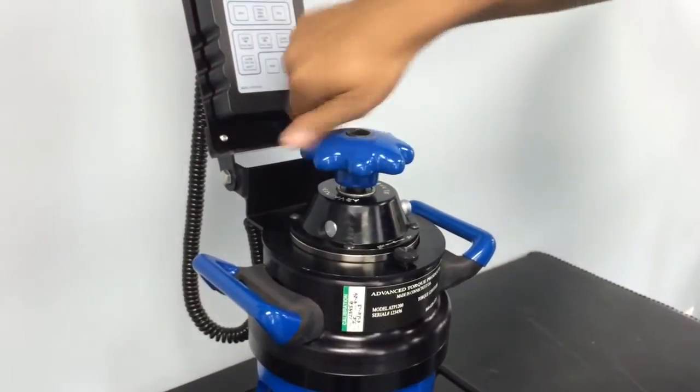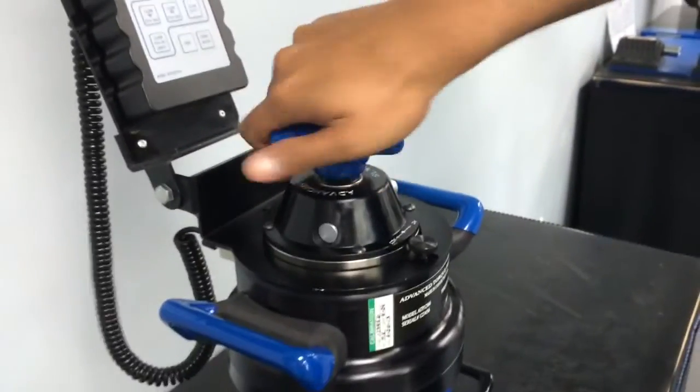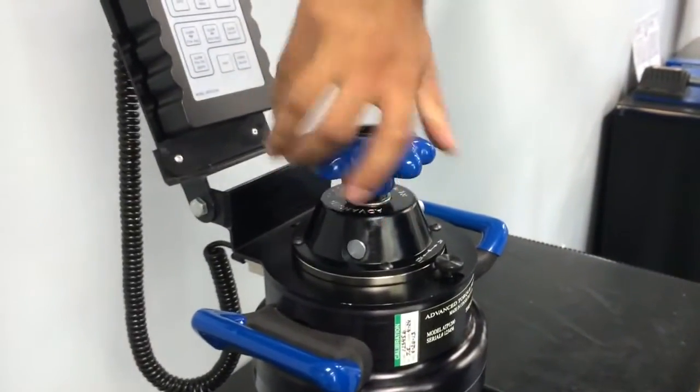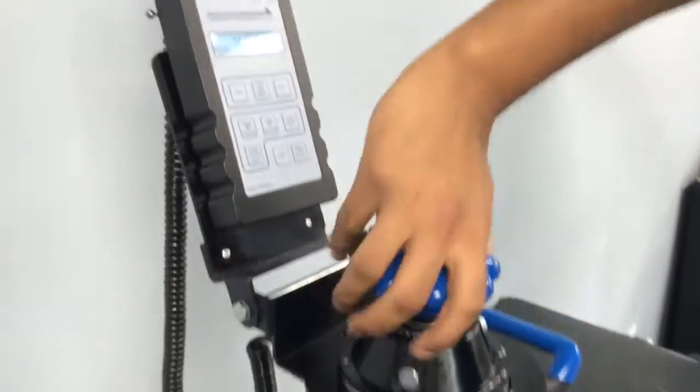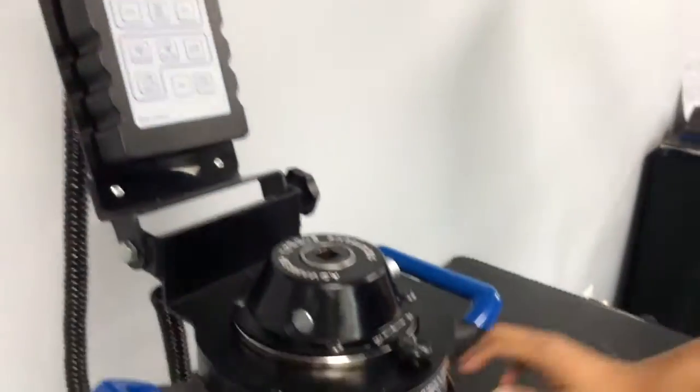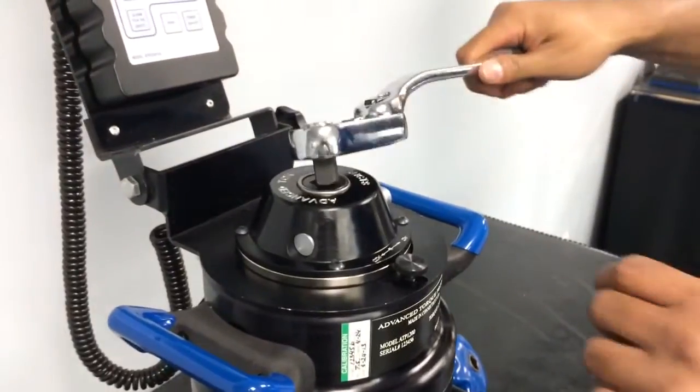We are going to tighten this nut to 350 foot pounds. The speed knob makes for easy turning during run-on and low forces, and as the forces become greater, a ratchet is then needed.